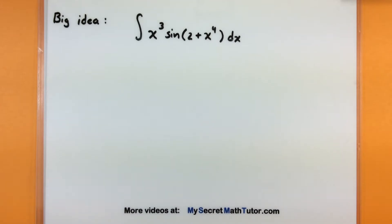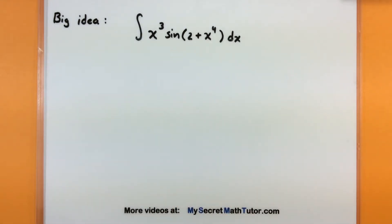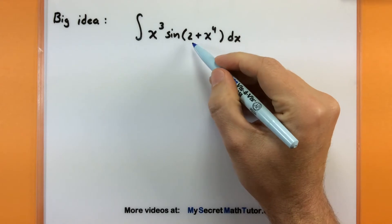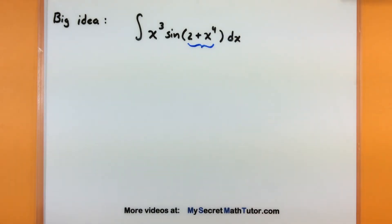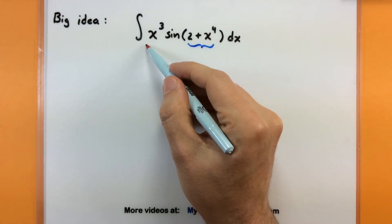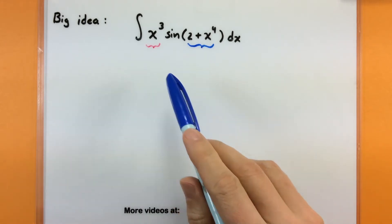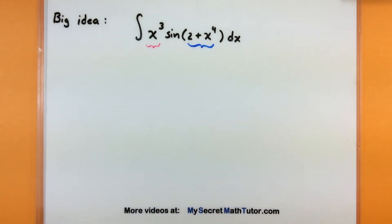You're starting off with what looks like a fairly complicated integral. It may have lots of variables raised to a power, or even functions inside of other functions. What you're going to do is comb it over and try to find some piece — maybe like this piece — where if you take its derivative, it looks something like another piece. If I take the derivative of the part highlighted in blue, the 2 plus x to the fourth, I get something like x cubed. It may not match exactly — you may end up with constants that don't match — but we want it to look pretty much like the other piece, at least in terms of the variables and the powers.